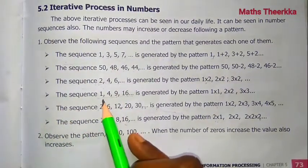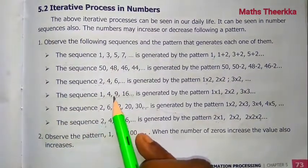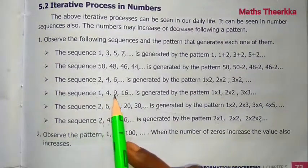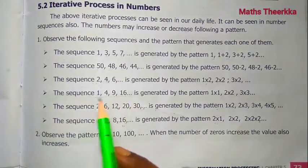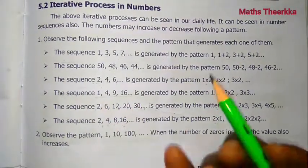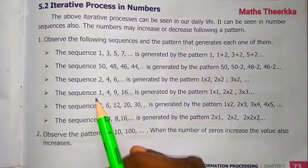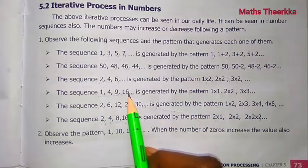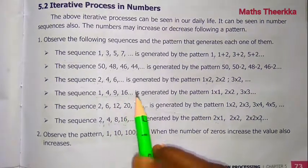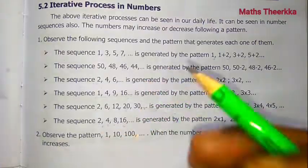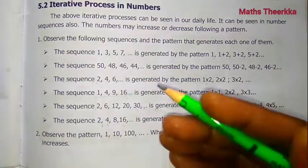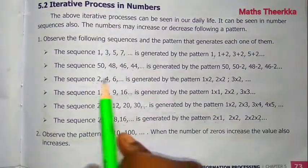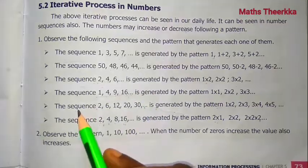Next, the sequence 1, 4, 9, 16. The pattern is: 1×1=1, 2×2=4, 3×3=9, 4×4=16. Natural numbers are multiplied by themselves — that is the square pattern.